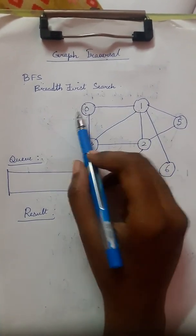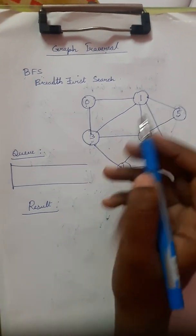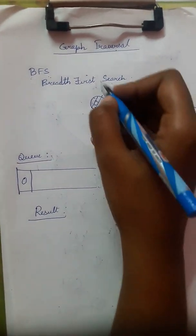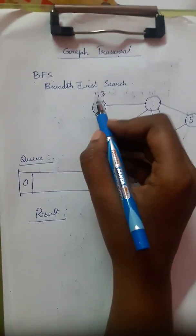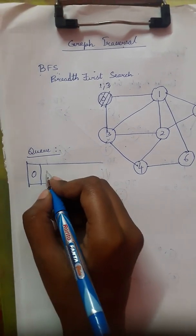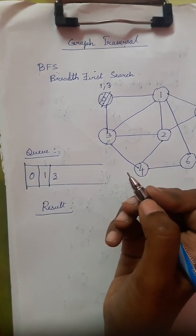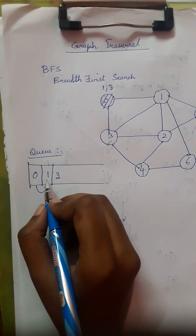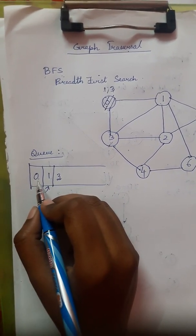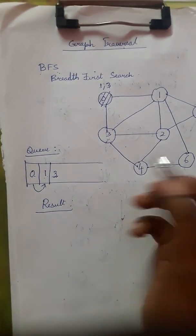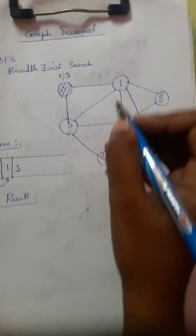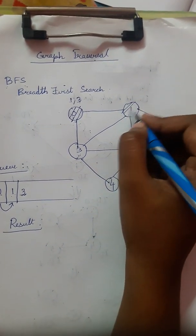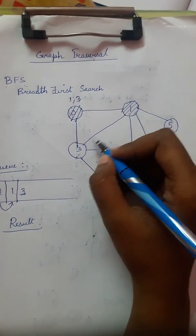Starting from node 0: 'adjacent' means the elements directly connected to 0. The adjacent elements for node 0 are 1 and 3. We have visited node 0, and we write its adjacent nodes 1 and 3 into the queue.